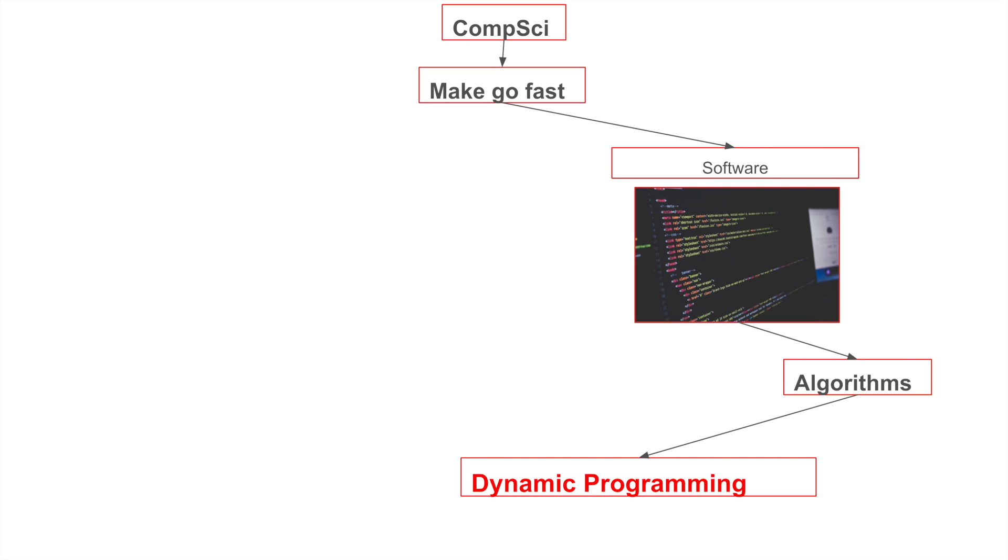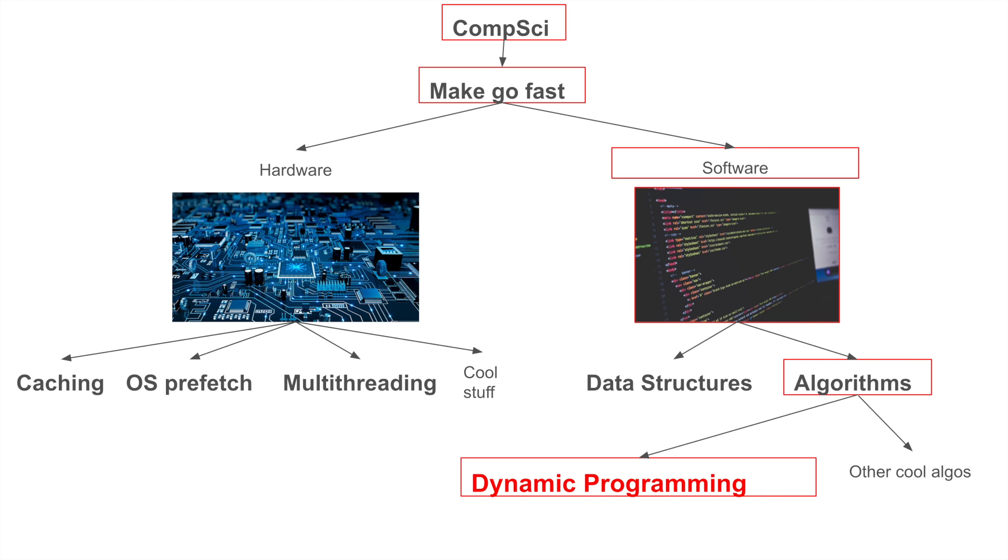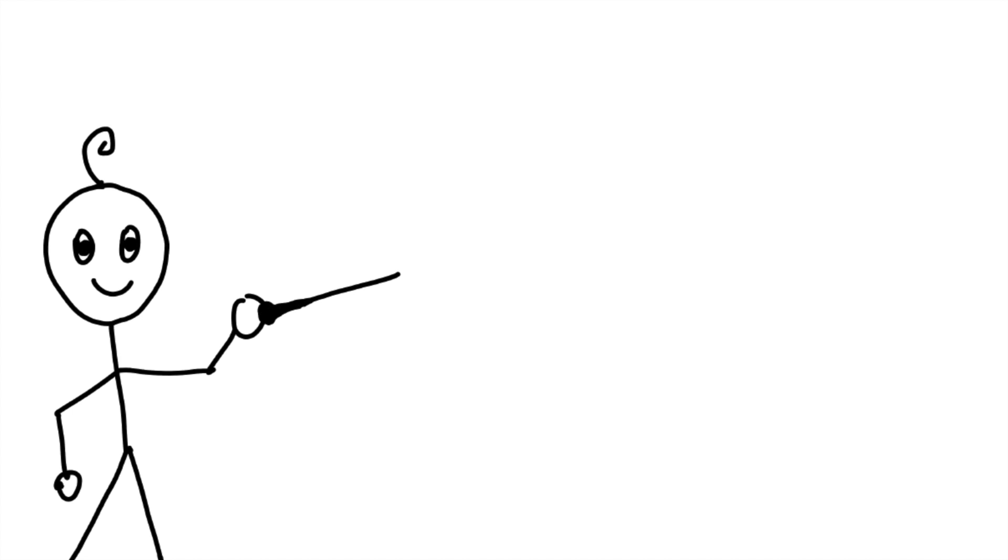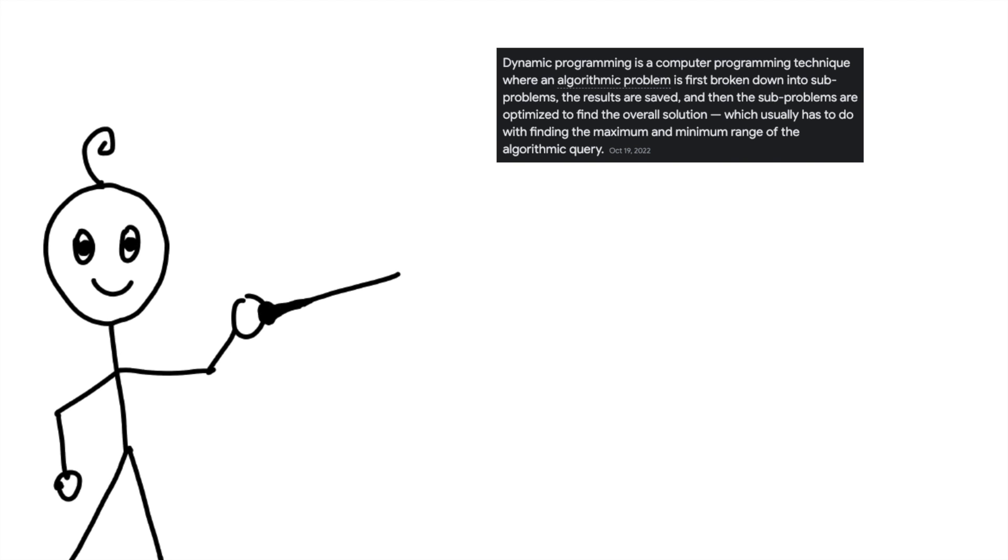DP is really good for solving some problems, but not so good for solving other problems. That's why we have a bunch of other algos, data structures, and hardware optimizations to help with other things. According to Google, DP is defined as... That's way too long. DP is really just two key parts: the results are saved and sub-problems.